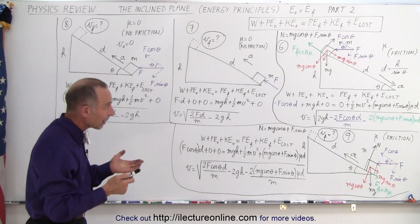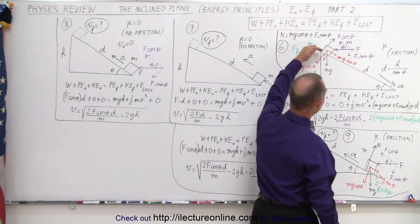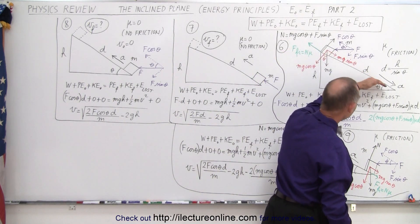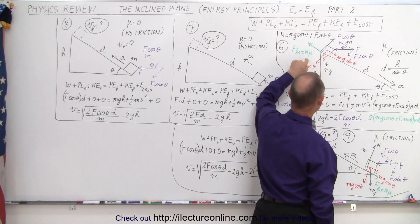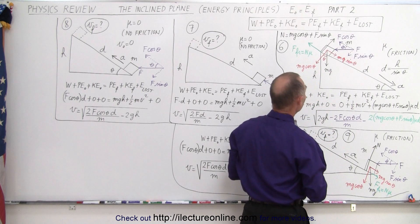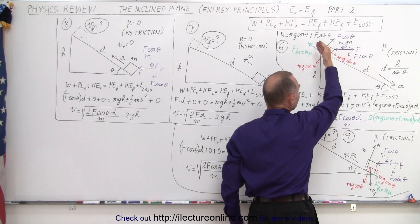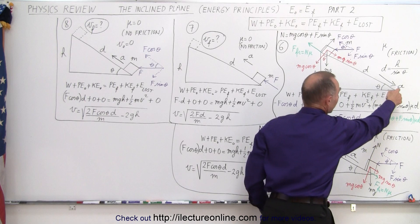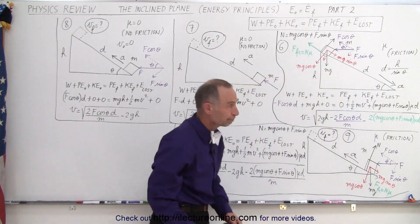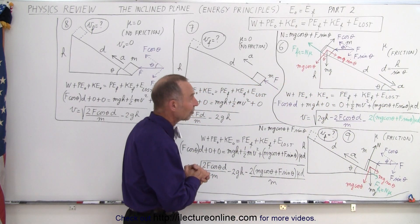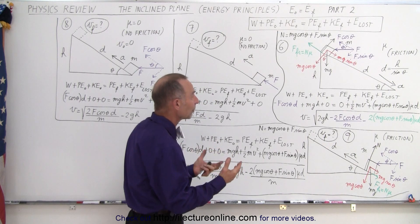In our next example, we have an object which is sliding down the incline. There is friction, so therefore there will be a friction force, but there is also a force pushing against it horizontally as it is sliding down and presumably accelerating downward. So, what is the velocity at the bottom of the hill?